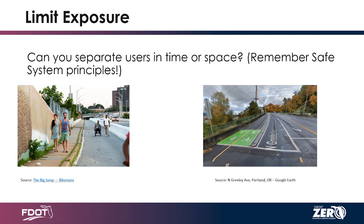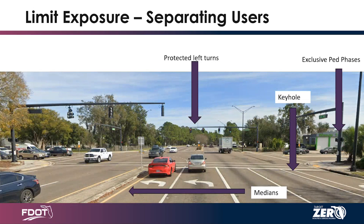We start seeing separation in our day-to-day design standards. The keyhole separates bicyclists from the roadway and from pedestrians because they go a little bit faster. Exclusive ped phases give pedestrians the chance to get into traffic without having to find a gap for themselves. Protected left turns and medians are good examples — even with cars, making sure we can only turn certain places, separating them. Bumping somebody back into their lane if they're not really trying to get into the opposite lane. That separation is probably the easiest concept to understand.